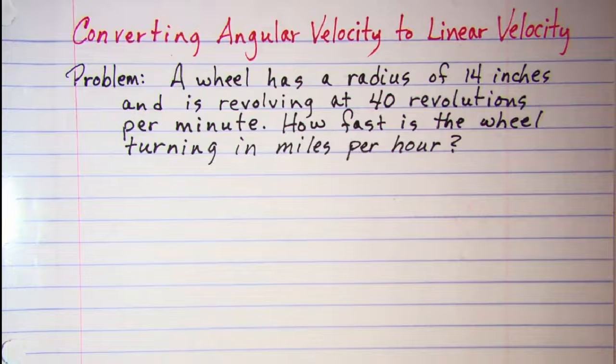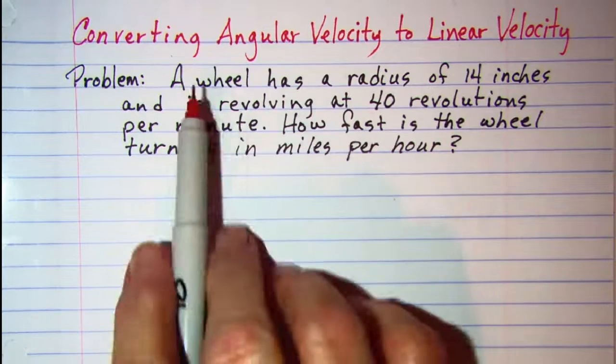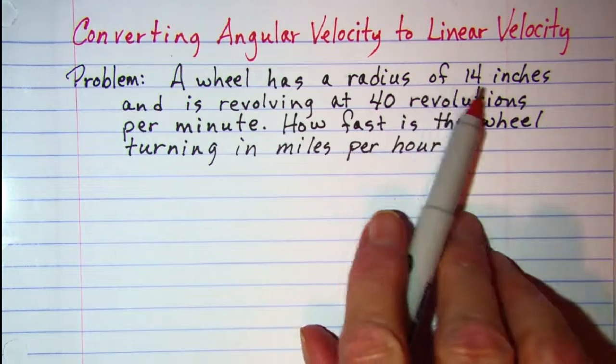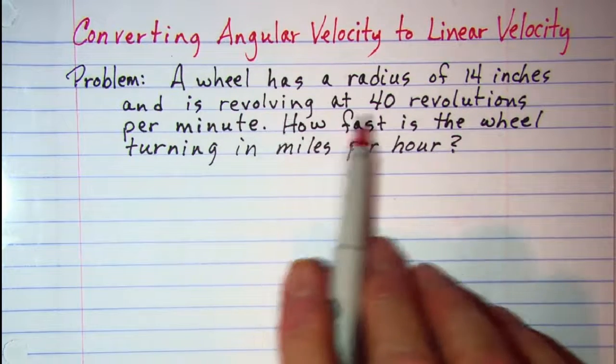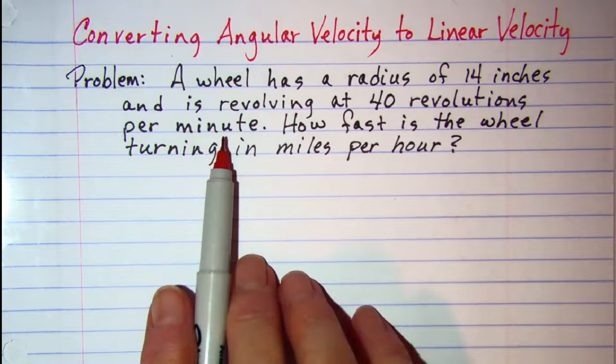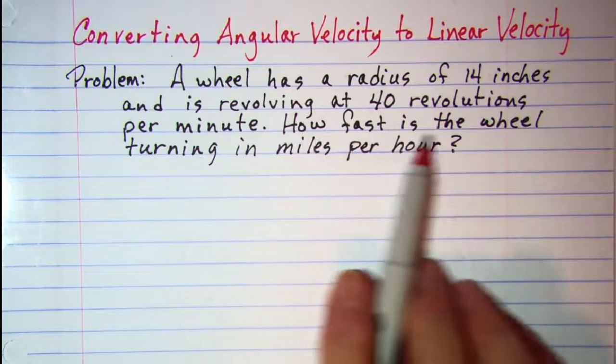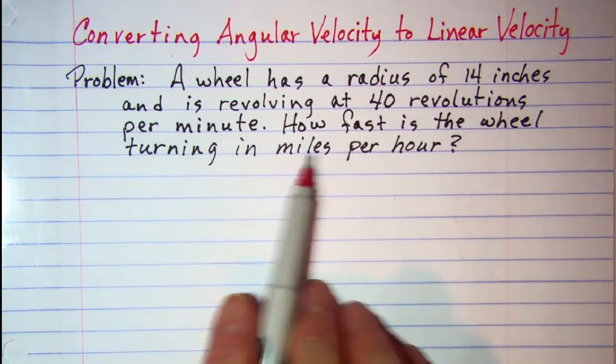In this video we'll be converting angular velocity to linear velocity. The problem that we'll be looking at is a wheel has a radius of 14 inches and is revolving at 40 revolutions per minute. How fast is the wheel turning in miles per hour?